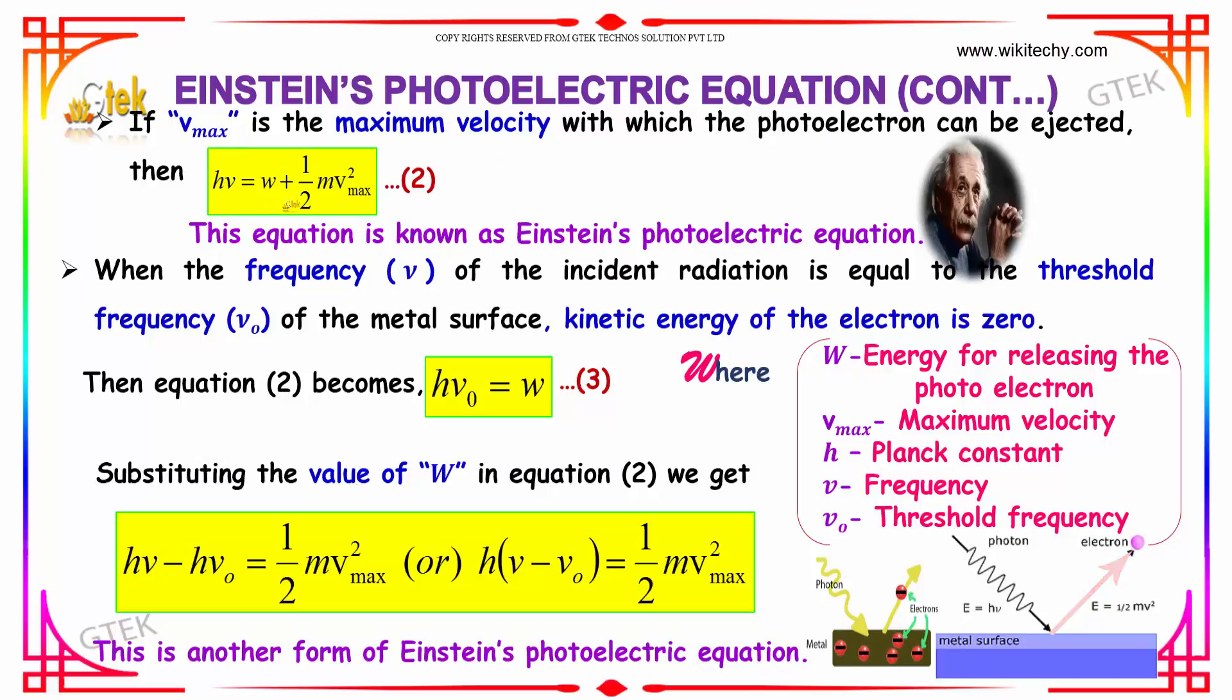If v max is the maximum velocity with which the photoelectron can be ejected, then h nu is equal to W plus half mv square max. The equation is known as Einstein's photoelectric equation.